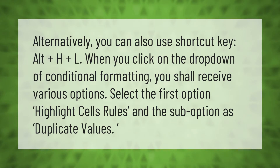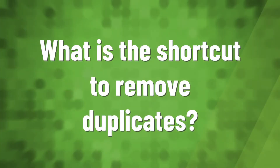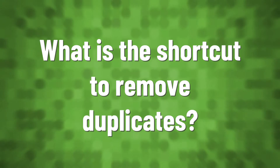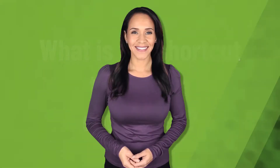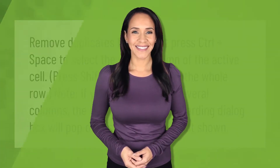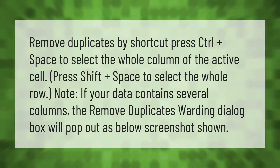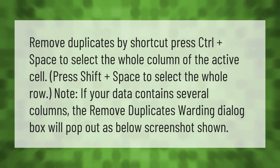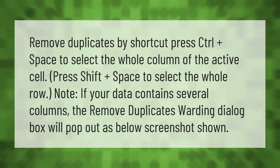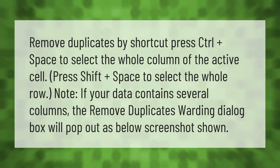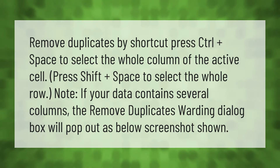To remove duplicates by shortcut, press Ctrl + Space to select the whole column of the active cell. Press Shift + Space to select the whole row. Note: if your data contains several columns, the Remove Duplicates dialog box will pop out.